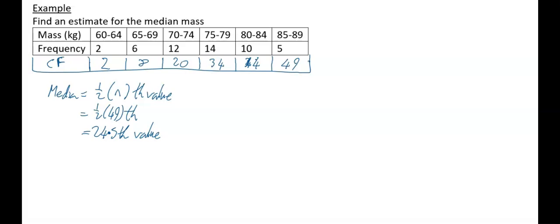The first two values are in the 60–64 class; values 3 to 8 are in 65–69; values 9 to 20 are in 70–74. We assume the 20th value equals 74.5 — the upper class boundary of that interval. We assume 12 values in that class are evenly spread, which is an assumption, making this an estimate rather than an exact median.